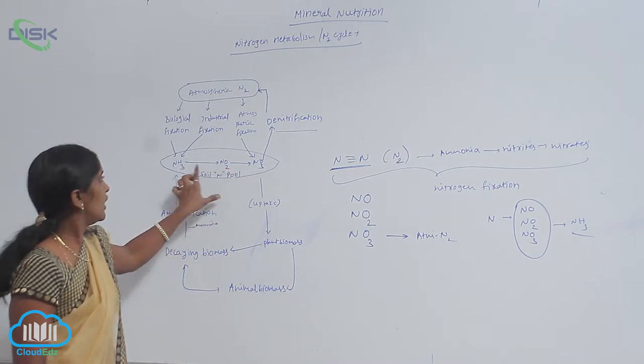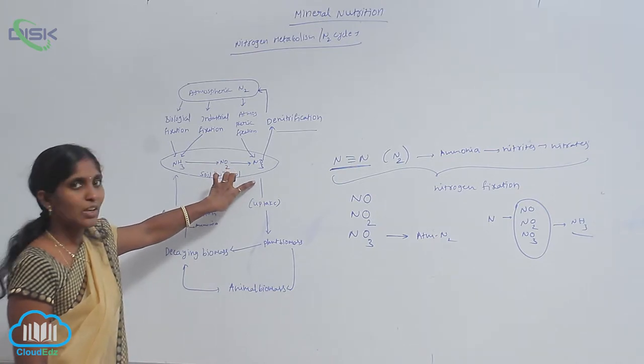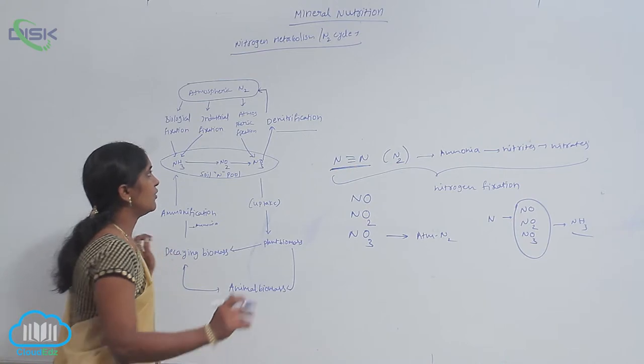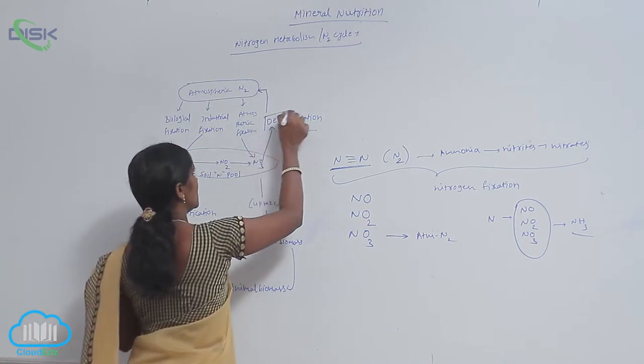So ammonia and nitrates are available forms for plants. Here another phenomenon also occurs, that is denitrification.